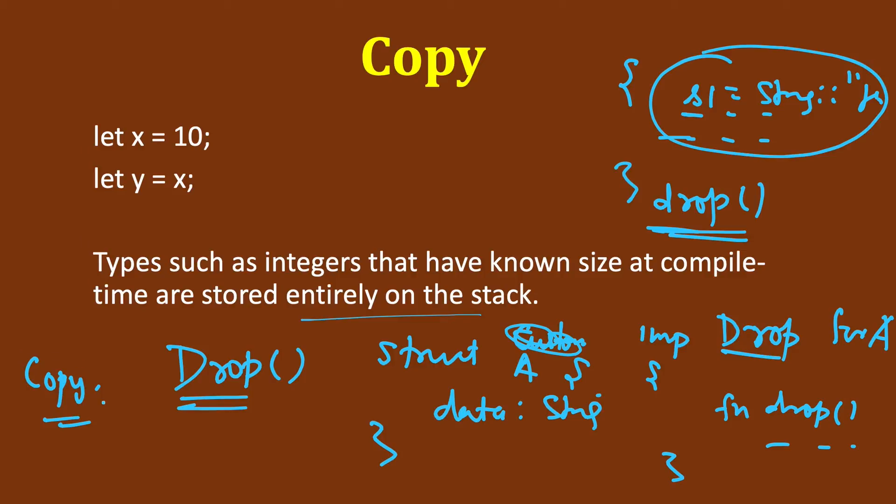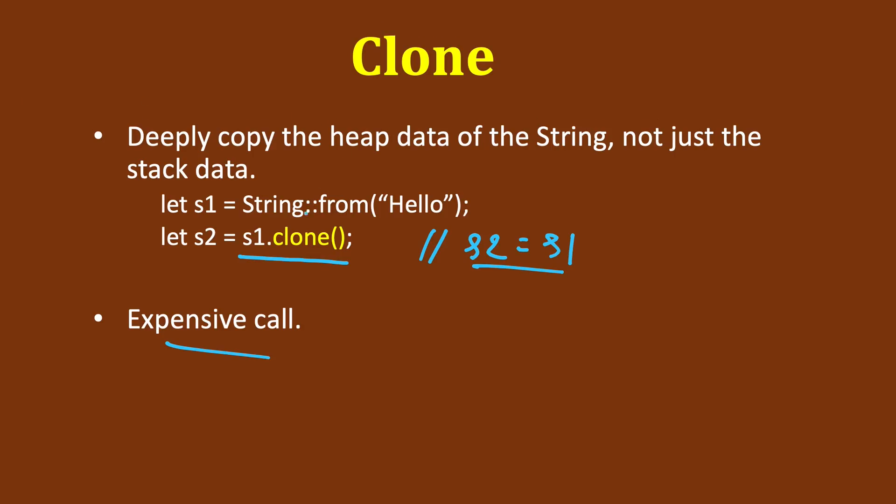You can see how we can do move and copy and clone with complex data types when we assign a value or clone a value. We will continue our discussion on ownership model in Rust in further videos. See you in the next video.